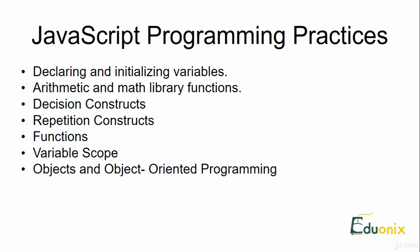Let's have a look at each and every example — what repetition constructs are all about, functions, variable scope, objects, and object-oriented programming. It is important to understand each one of them because they all conceptualize JavaScript programming practices. Let's look at each of these examples in our JS shell. I'm going to start with repetition constructs, which are nothing but a conceptualization of while loop and do-while loop.